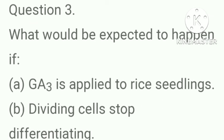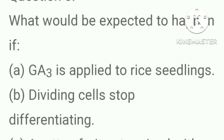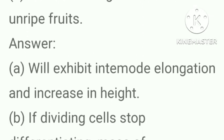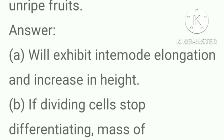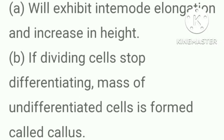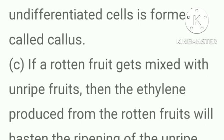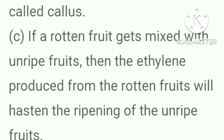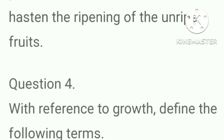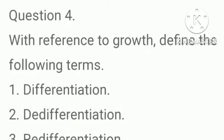What would be expected to happen if GA3 is applied to rice seedlings, dividing cells stop differentiating, and a rotten fruit gets mixed with unripe fruits? Answer: Rice seedlings will exhibit internodal elongation and increase in height. If dividing cells stop differentiating, a mass of undifferentiated cells called callus is formed. If a rotten fruit gets mixed with unripe fruits, the ethylene produced from the rotten fruit will hasten the ripening of the unripe fruits.